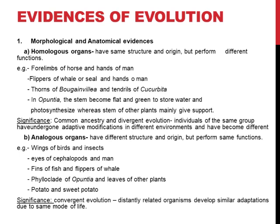Now, how do we understand the significance of these homologous organs and their role in evolution? They show common ancestry — meaning their origin is from a common ancestor — and divergent evolution. Divergent means individuals of the same group, which had the same ancestors, have undergone adaptive modifications so that they can adapt in different environments and have become different.